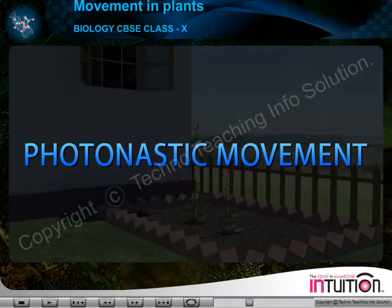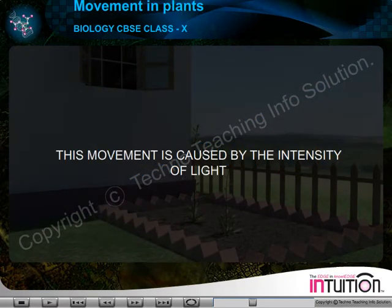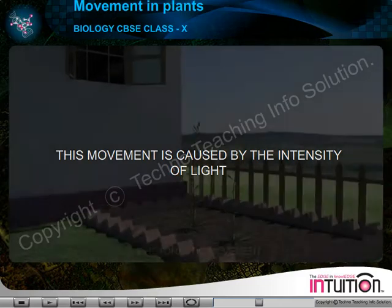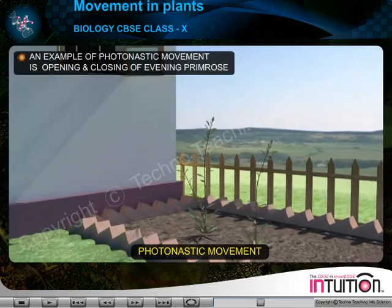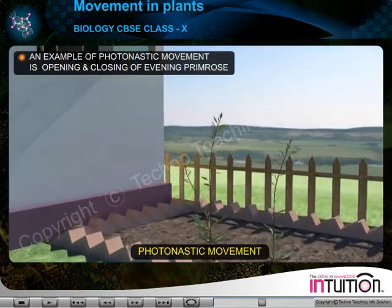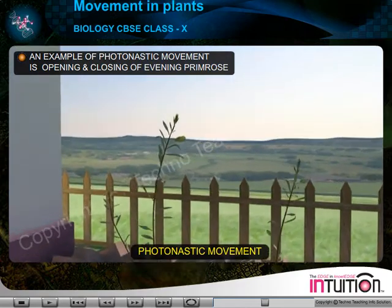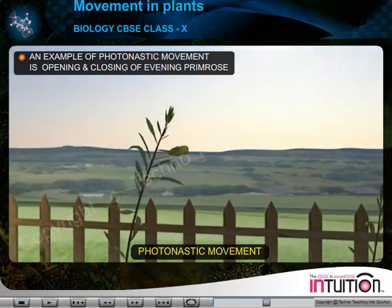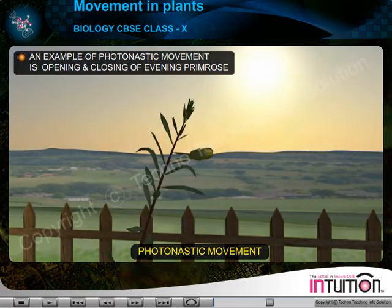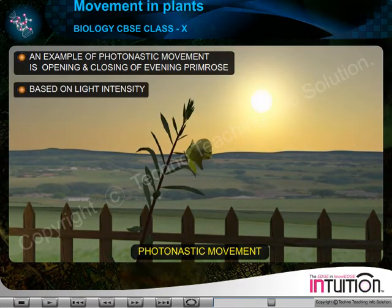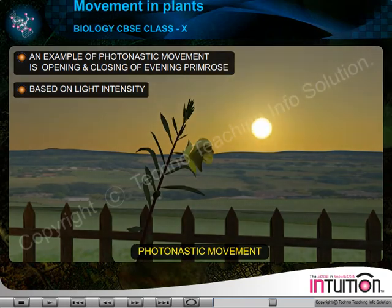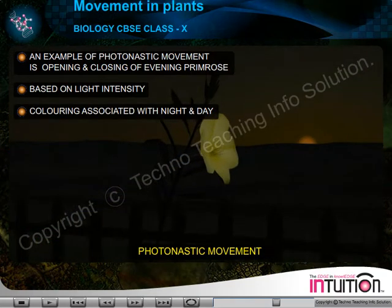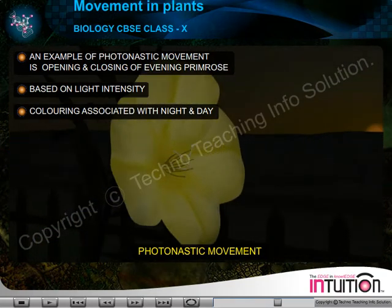Photonastic movement. This movement is caused by the intensity of light. An example of photonastic movement is the opening and closing of evening primrose based on light intensity and colouring associated with night and day.